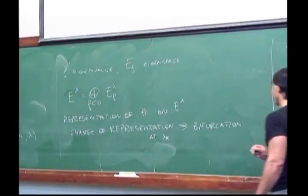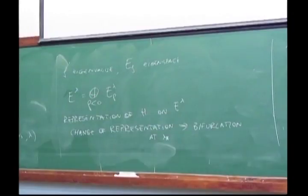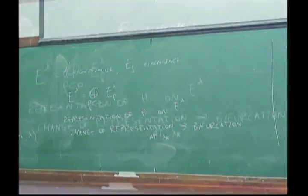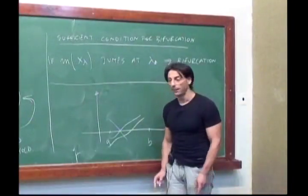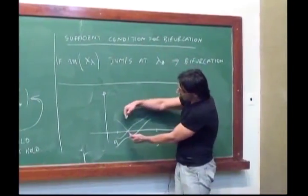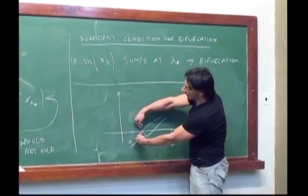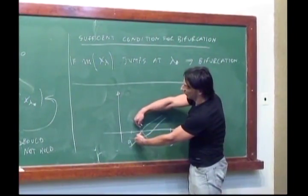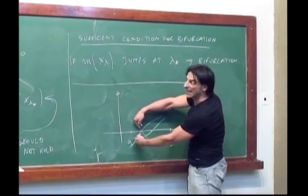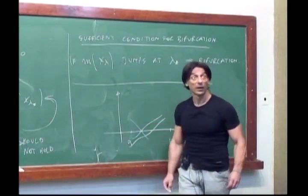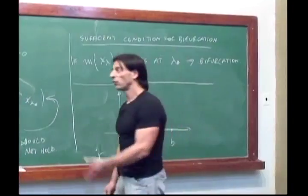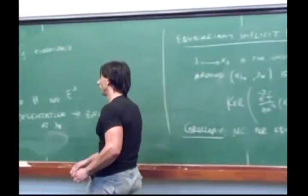A change of representation implies bifurcation at λ*. Going back to the picture, this takes care of situations where you have crossings of eigenvalues, but the corresponding eigenspaces are not equivalent as H-spaces. Let me give you an example where this applies.